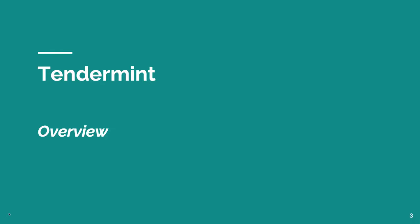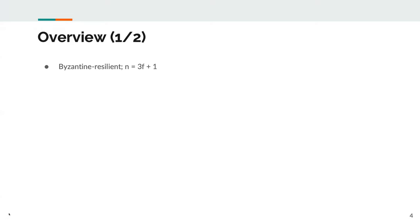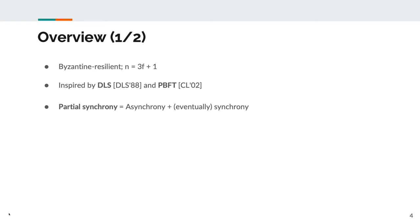Tendermint is a Byzantine-resilient consensus protocol which tolerates less than 33% of all processes being faulted. Tendermint draws inspiration from two seminal consensus algorithms: the DLS algorithm, introduced by Dwork, Lynch, and Stockmeyer, and PBFT, introduced by Castro and Liskov. Tendermint operates in partial synchrony — roughly speaking, a partially-synchronous system behaves asynchronously until the global stabilization time, and after this time it behaves synchronously.